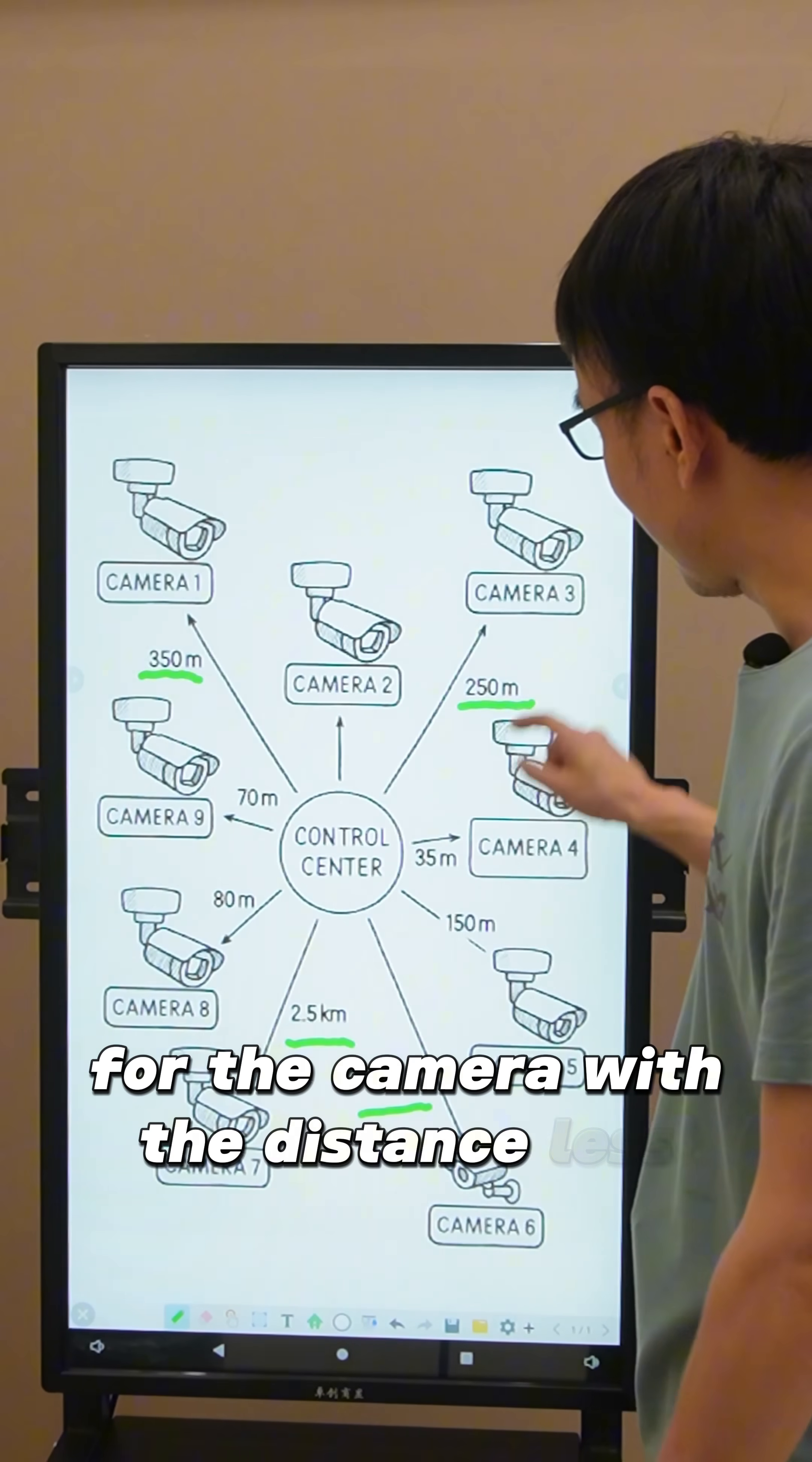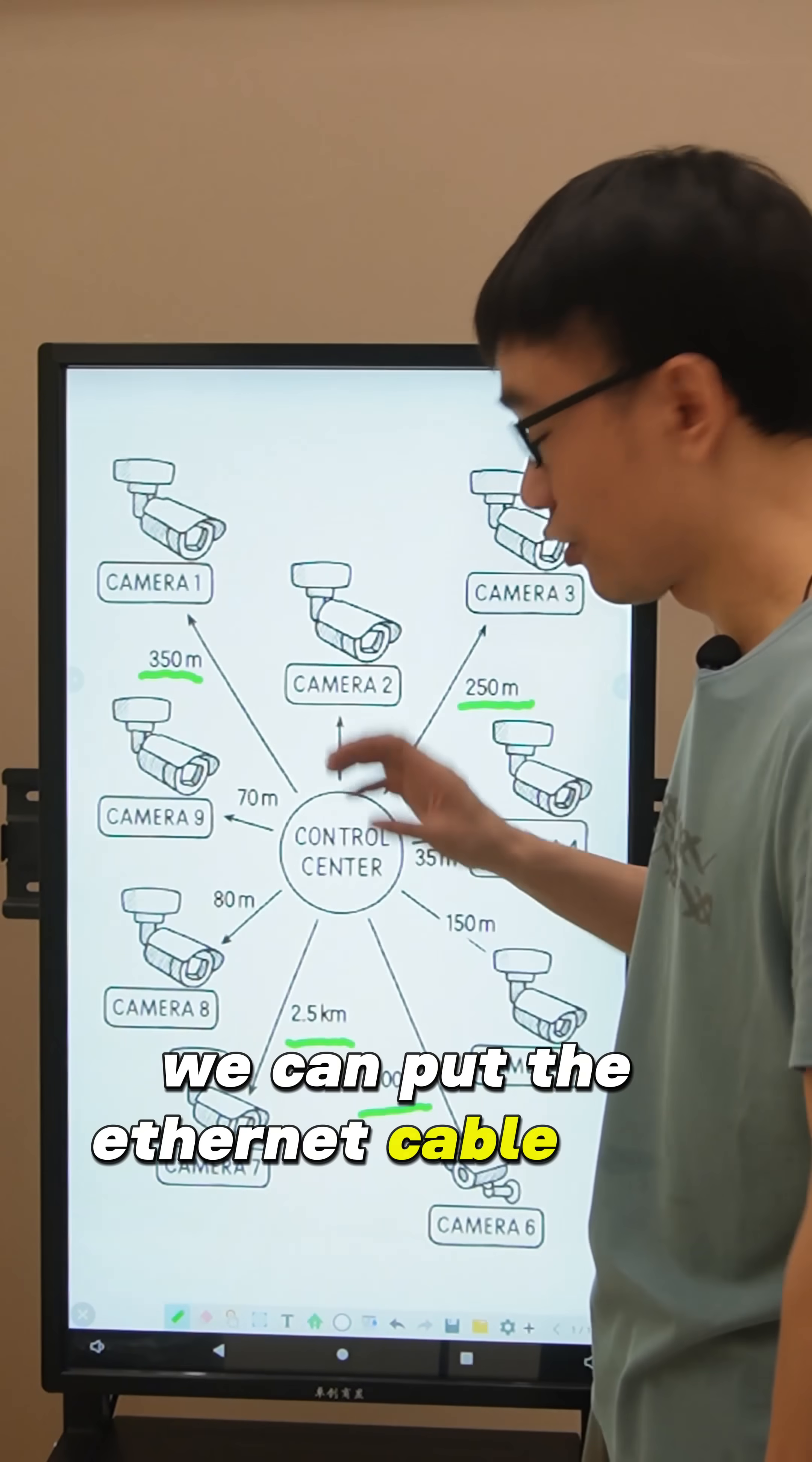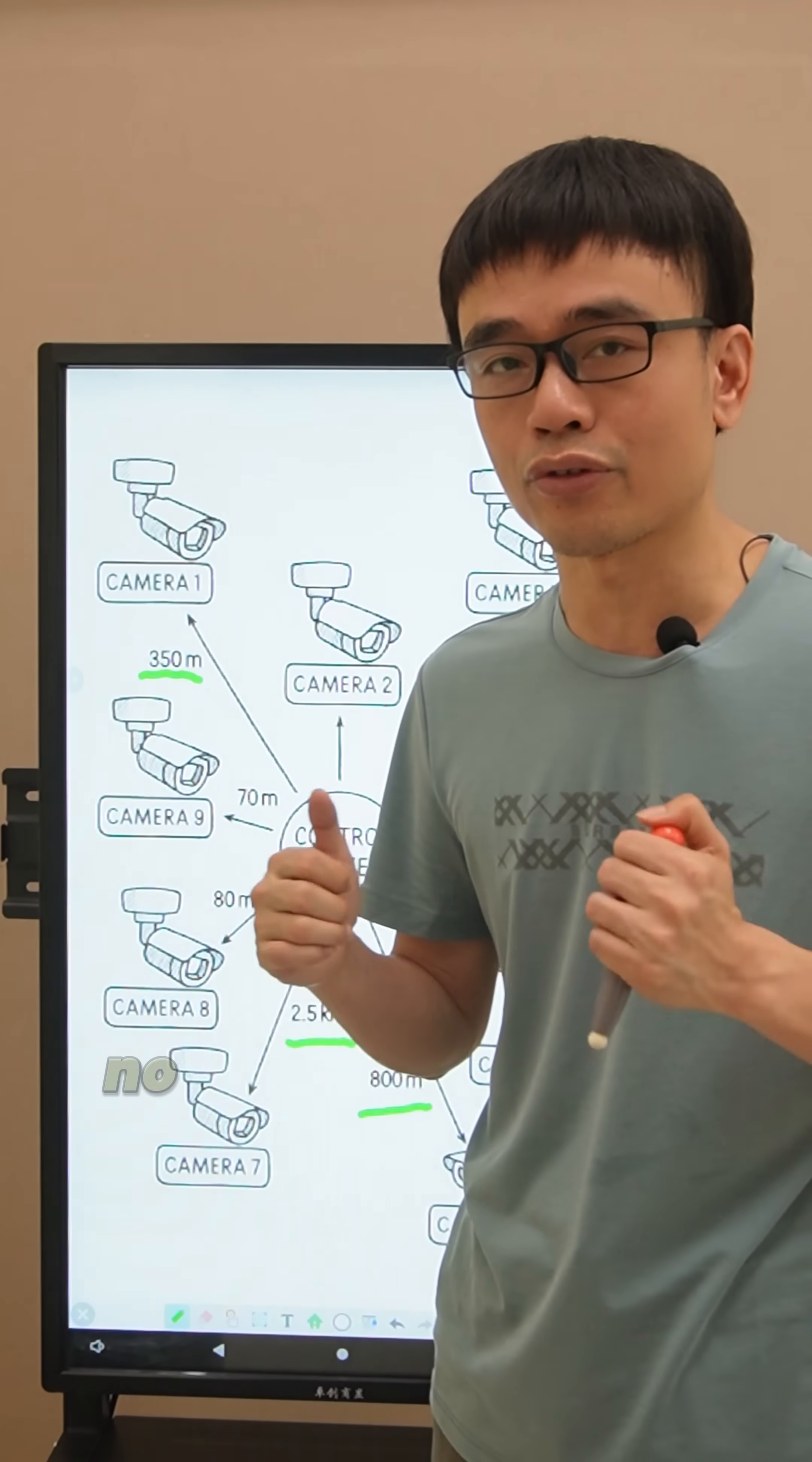For cameras with a distance less than 250 meters, we can run the ethernet cable directly from the switch to those cameras. There's no need to have an extension solution.